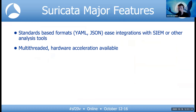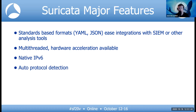Suricata adopts many standards for both configuration and output — YAML-based configurations and even sub-YAMLs — and then that JSON output helps with integration into other SIEMs and analysis tools. There is multi-threading, possible hardware acceleration, native IPv6 support, and auto-protocol detection. A good example of that is TLS traffic: in a rule you don't have to define the port you anticipate to see TLS traffic on. You can use a TLS keyword and the engine will detect whenever a TLS session is established regardless of port — a really powerful and awesome feature.